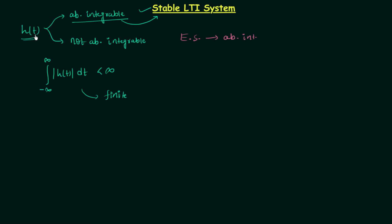Whenever the impulse response is given, it is nothing but a signal which represents the LTI system. So, given an impulse response or signal, you have to find whether it is an energy signal or not. If it is an energy signal, then it is absolutely integrable and the LTI system will be stable. The process is simple: check if the given impulse response is an energy signal. We already have detailed discussions on energy signals, power signals, and neither-energy-nor-power signals.